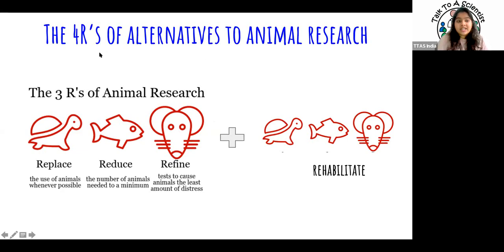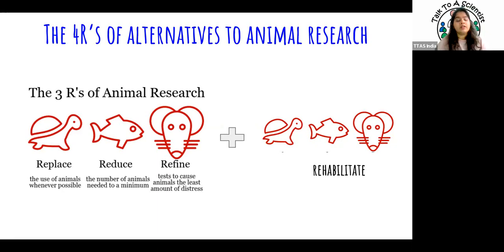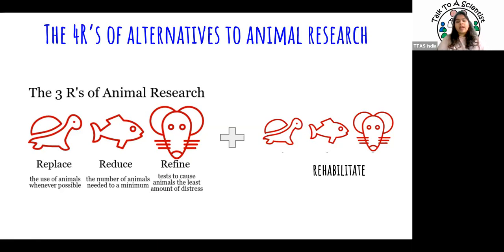The second R is Reduce — always use the minimum number of animals needed. If you can show results in 50 mice, use only 50 mice, not 100. If there are other ways to test in the lab without animals first — perhaps showing a drug might not be useful before going to animal studies — you should do that first, potentially eliminating the need for an animal study altogether.